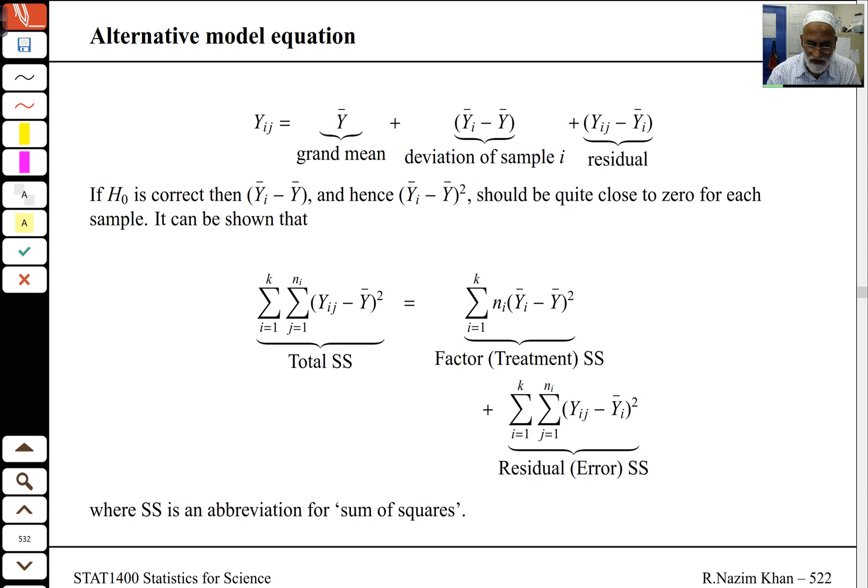The alternative model equation is yij equals the grand mean plus the group mean minus y bar, and then the observation minus yi bar. You can see the y bars cancel off and the yi's cancel off, so this looks the same. This grand mean term is found by averaging all the data, and there's the residual term, which is the observed value minus the group mean. Now if H0 is correct, we're assuming all the means are the same, then all the means should be equal to the grand mean, and so this term here should be small.